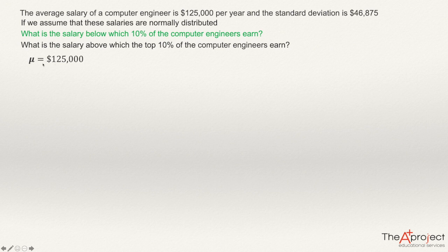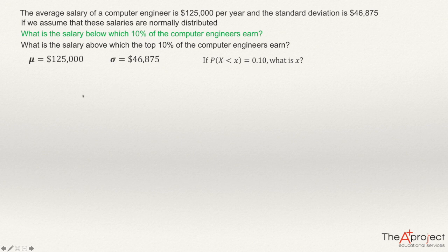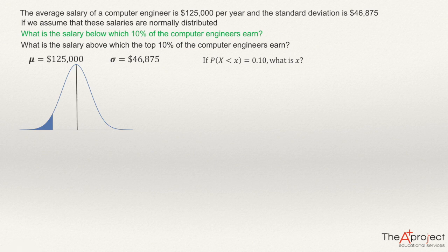We have that mu, the mean, is $125,000, and the standard deviation is $46,875. The question is: what is the value x such that the probability that the random variable X is less than x equals 0.10, or 10%? We are symbolizing the random variable — computer engineer salaries — as X. We have in mind a bell-shaped normal distribution, with $125,000 in the middle, and we are looking for a value x such that 10% of the area is to the left.